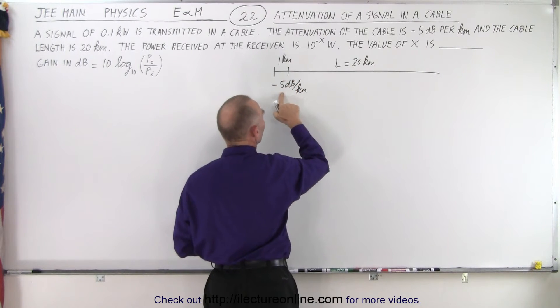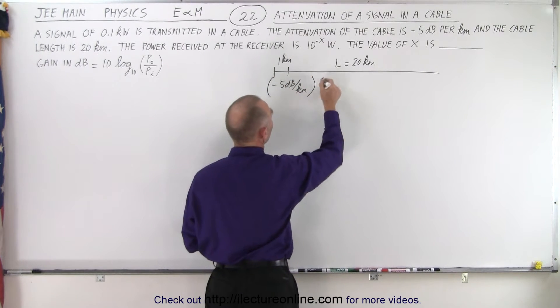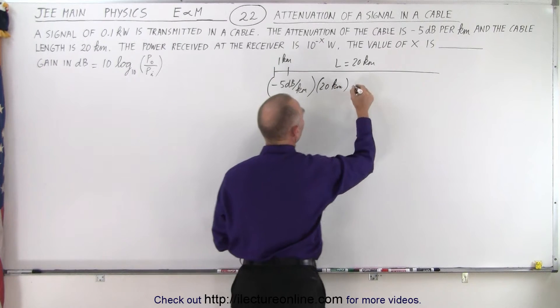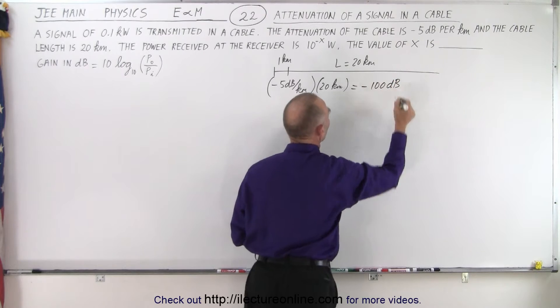If we multiply -5 dB per kilometer times 20 kilometers, notice the kilometers cancel out and we end up with a -100 dB attenuation.